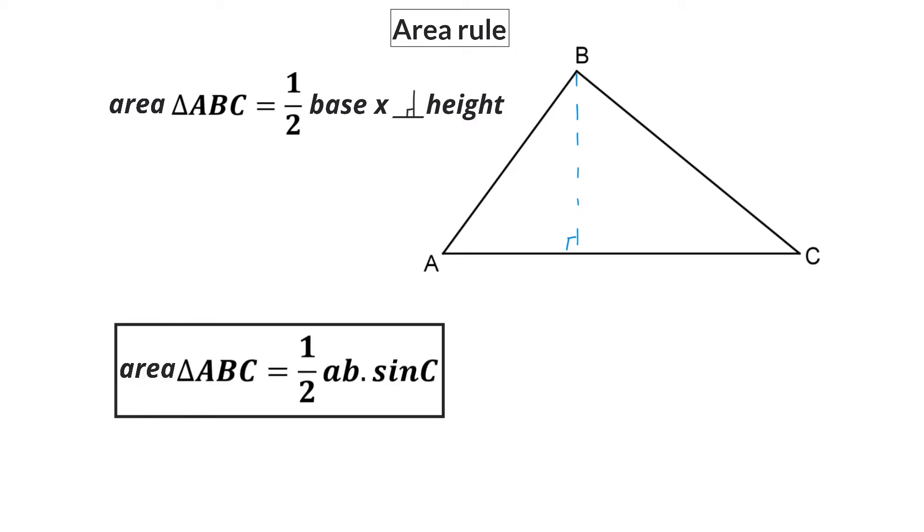And that is why today we are having a look at the area rule, which gives us a second option to determine the area of a triangle. In this formula we need side A and B and angle C. And if you go and have a look on our sketch, side A and B and angle C means it has to be the included angle. Therefore the area rule can be used if you already have two sides and the included angle.